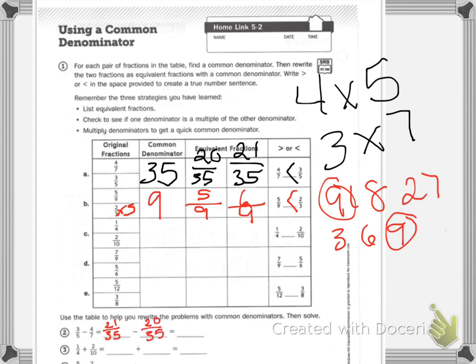equals what? My denominator stays, so 35. And then 21 minus 20 is 1.